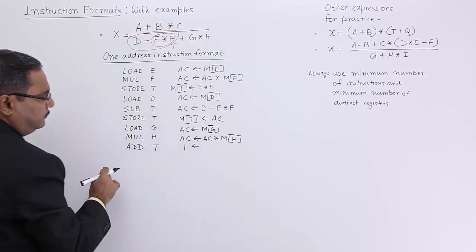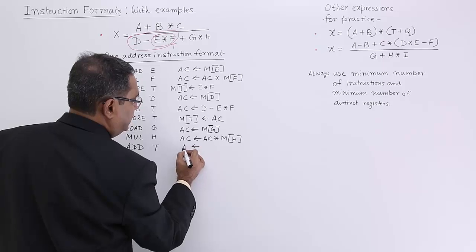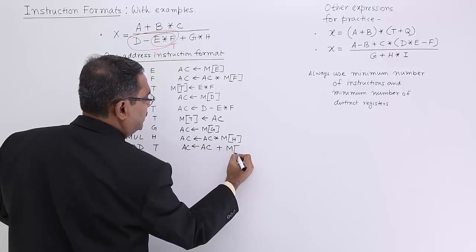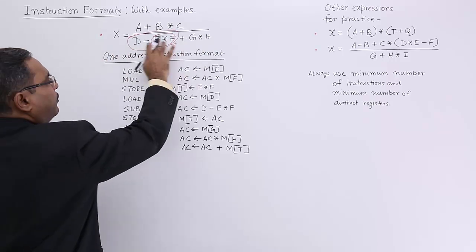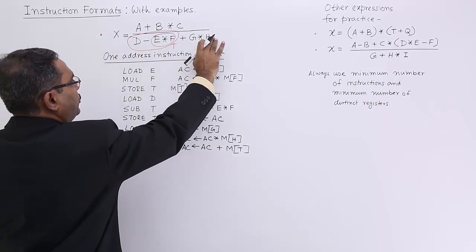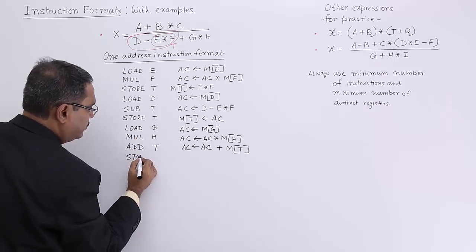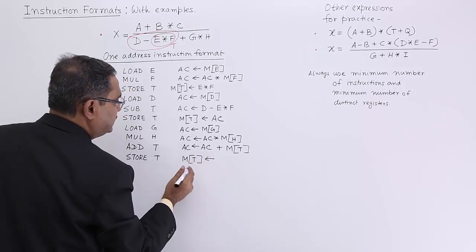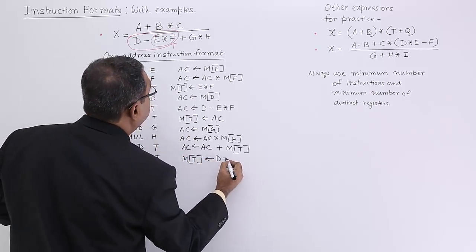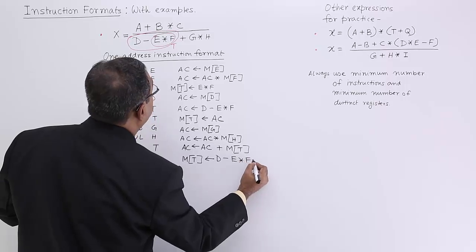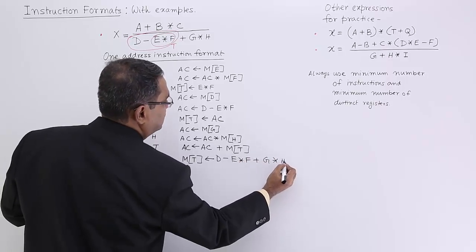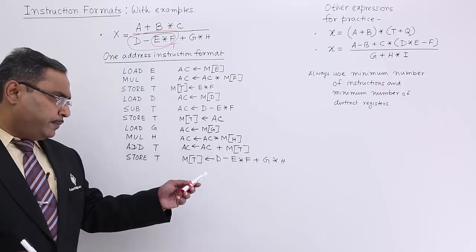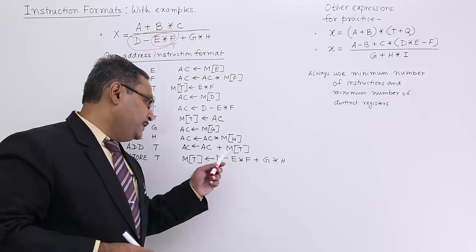t is containing D minus E*F, and the accumulator is equal to accumulator plus memory content for variable t. So everything is now in the accumulator — the full denominator is now in the accumulator. Now I am just storing it back to t: STORE t. The memory content for variable t will get initialized by the accumulator's content, which is D minus E*F plus G*H — the full denominator content has been stored in t.